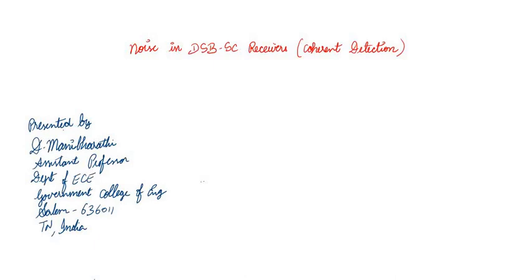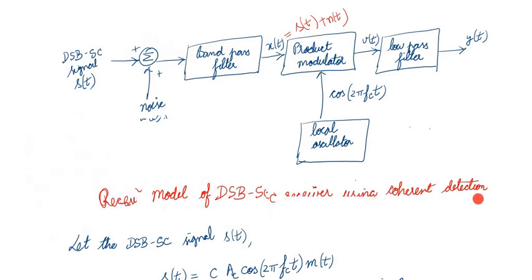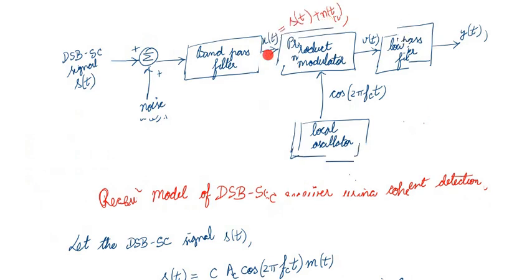In this video we are going to discuss about the noise in the double sideband suppressed carrier type receiver. Particularly, the receiver we are considering is the coherent type receiver — coherent detection. In the last video we discussed about the general receiver model, but here the model is the double sideband suppressed carrier receiver with coherent detection. Welcome to the lecture.